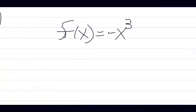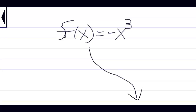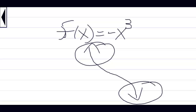Now suppose you have an odd function that has a negative sign in front of the leading term. Then what you have is the graph of y = x³, but reflected. There are really only four basic kinds of end behavior: the same end behavior as y = x³, y = -x³, y = x², and y = -x².